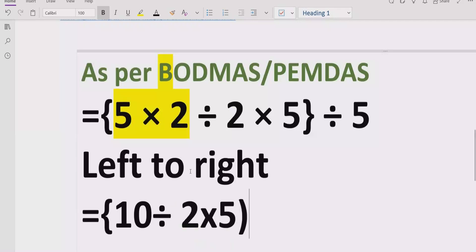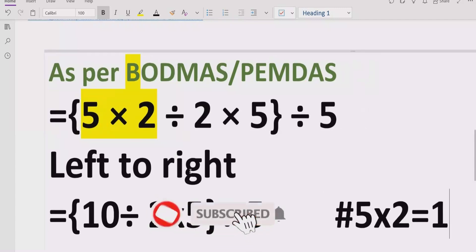So we will multiply these two terms: 5 times 2 equals 10, and divide it by 2 multiplied by 5, we will write as is. And again, we will divide by 5, we will write as is. Here the expression 5 multiplied by 2 equals 10.